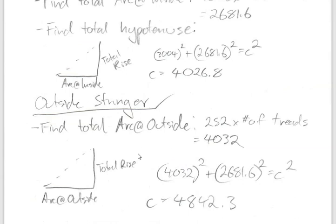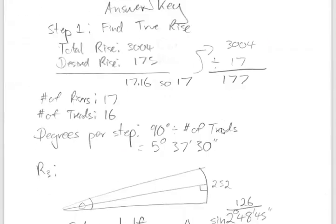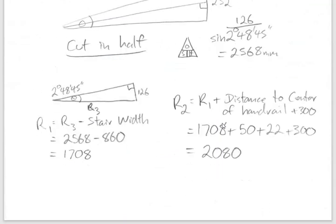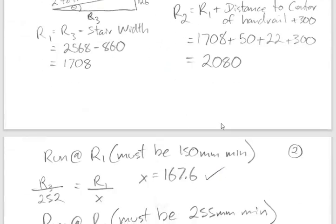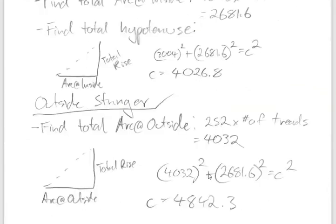For the outside stringer we use the arc at R3, which was 252mm per tread. The same Pythagorean calculation gives us an outside stringer length of 4842mm. The outside stringer is always longer than the inside — that's a good way to check your work. If the numbers don't look right, something has gone wrong along the way.